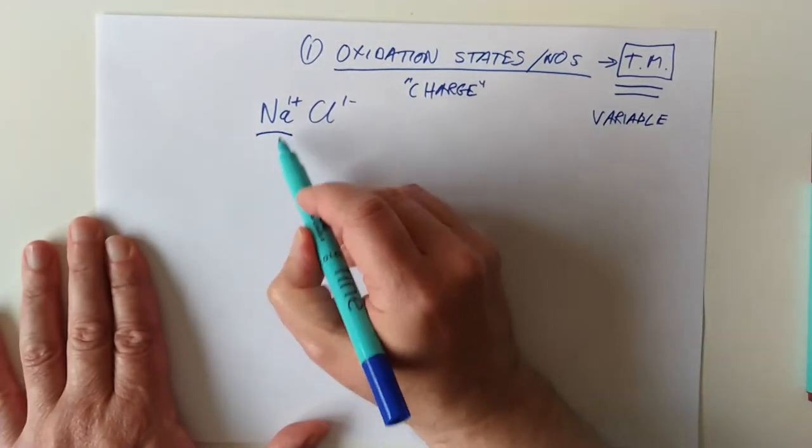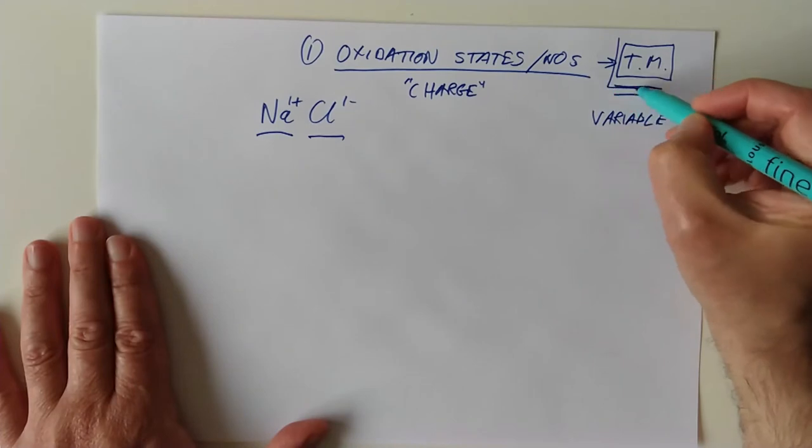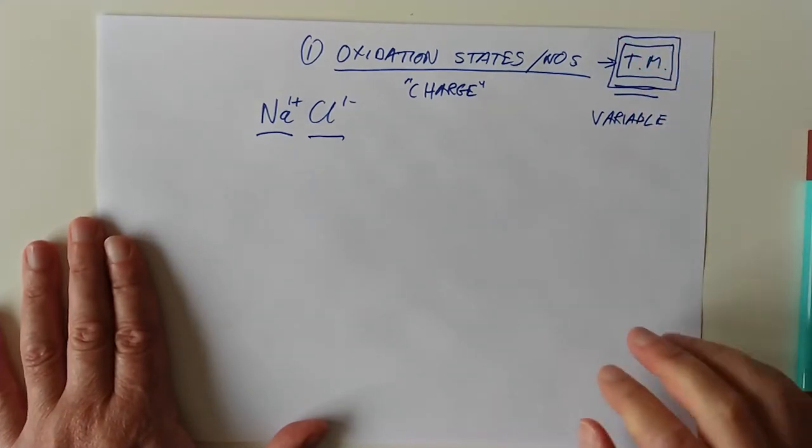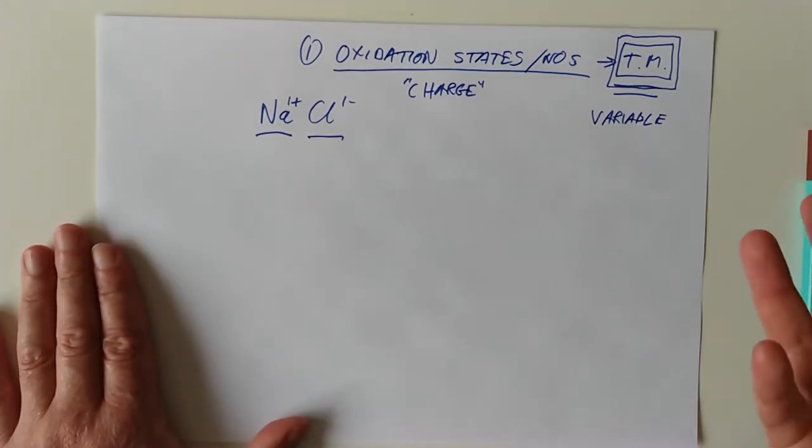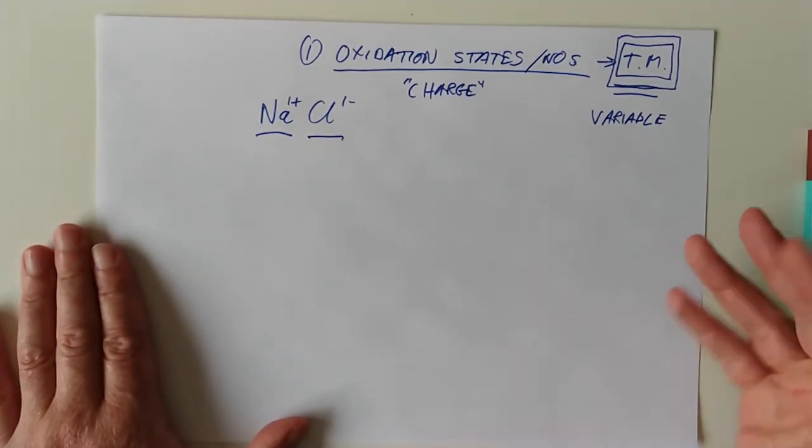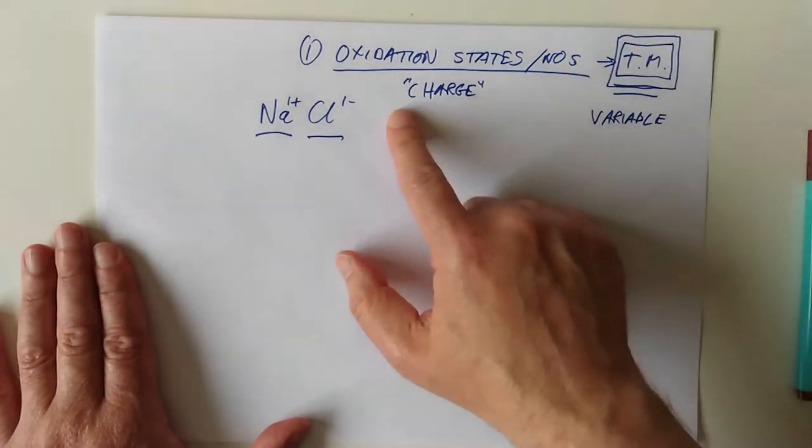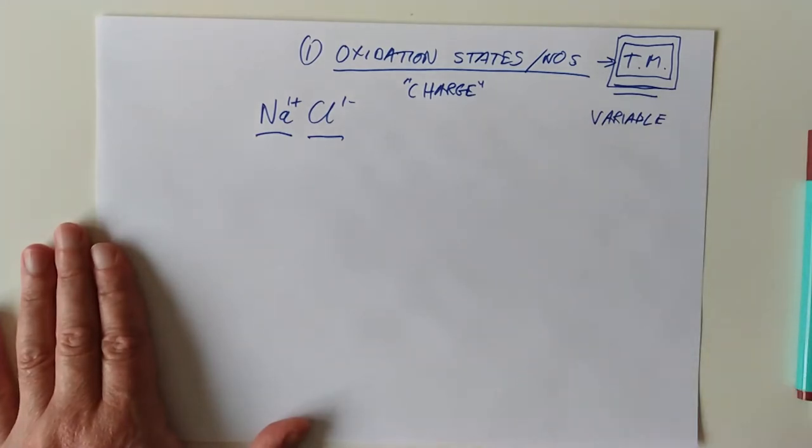One of the things the transition metals can do is they can have variable oxidation states. That's a nice trick. Because if you identify the oxidation state as effectively the charge on the ion, then sodium is set as 1+ forever, and chloride is set as 1-. These guys here, they're much more flexible in their outlook. That means there is no instant recall. That's why they don't have a fixed valency either, because they don't have a fixed charge. Their charge can vary, and therefore so can their valency.